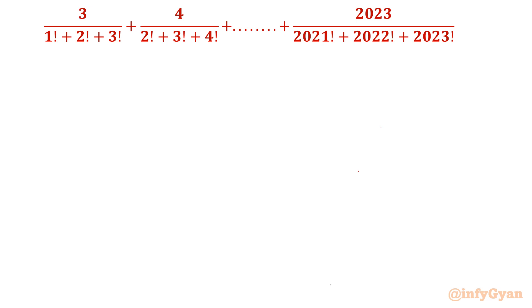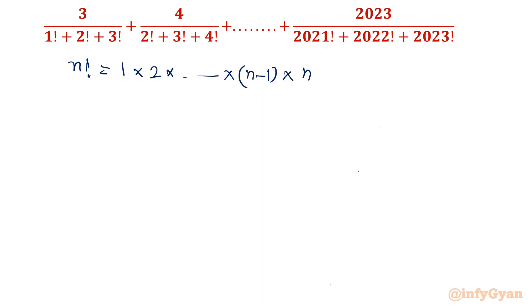Let's get started by writing the recursive formula, because I am going to use that formula mainly. So if I am writing n factorial, its meaning is I have to multiply from 1 to that particular number. Before the last term it would be n-1, and the last term is n. This is n factorial — this is what we know.